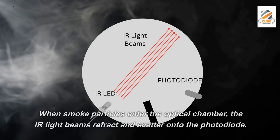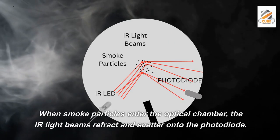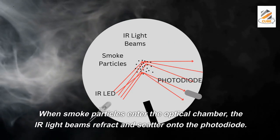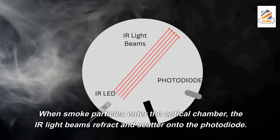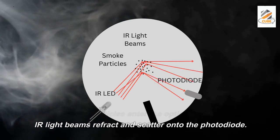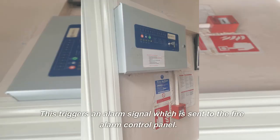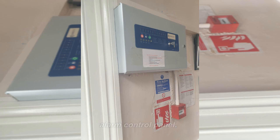When smoke particles enter the optical chamber, the IR light beams refract and scatter onto the photodiode. This triggers an alarm signal which is sent to the fire alarm control panel.